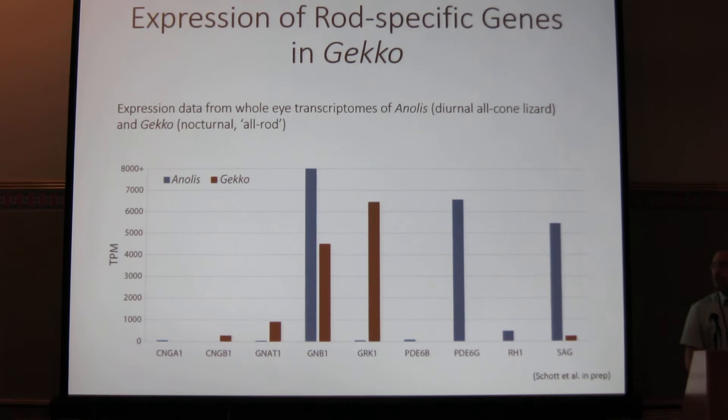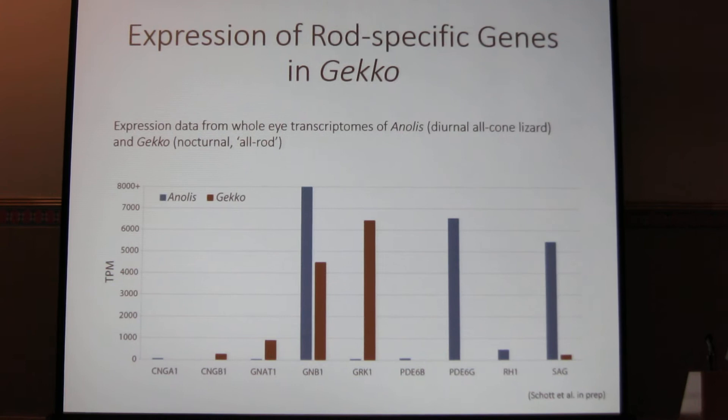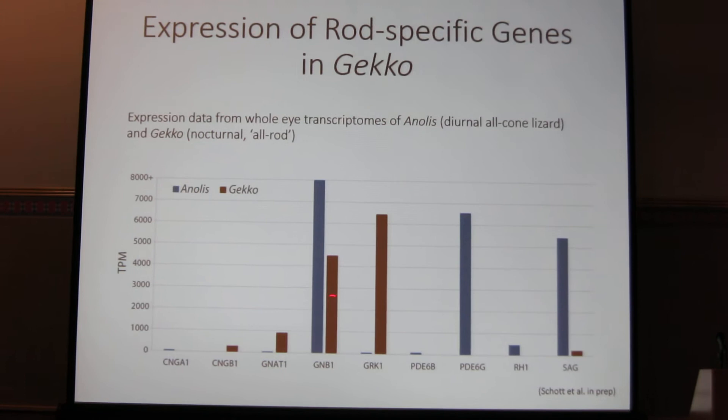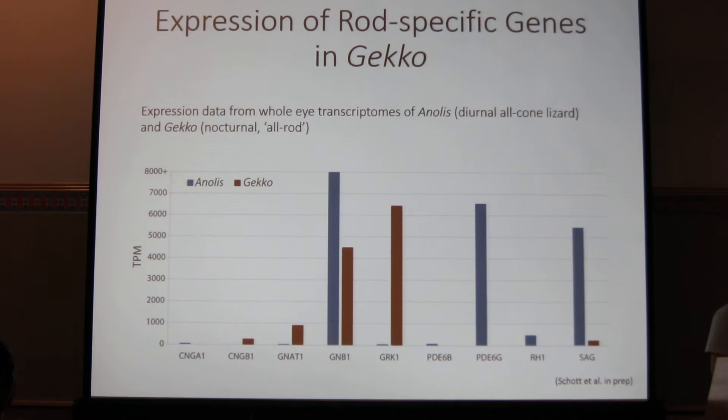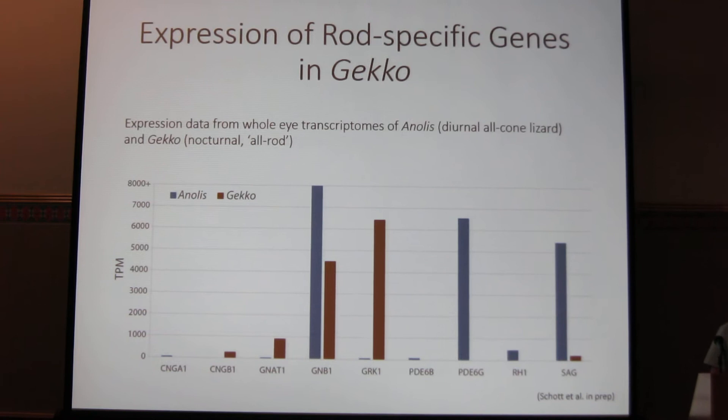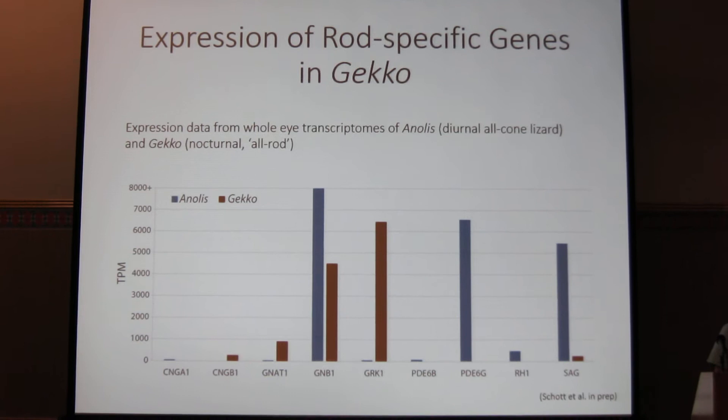I used whole-eye transcriptomes from a diurnal lizard Anolis and a nocturnal Gekko gecko. When we compare the expression levels of the rod-specific genes, we can see that the gecko actually does express some rod-specific proteins at similar levels to the Anolis. However, we did not find the rod visual pigment, as expected. Our next step would be to actually look at where these genes are expressed in the eye — are they present in the same photoreceptor cells or only specific ones, and do we have co-expression with cone-specific genes?